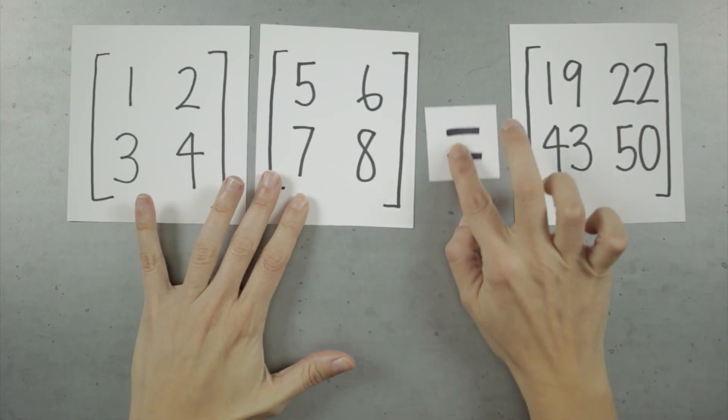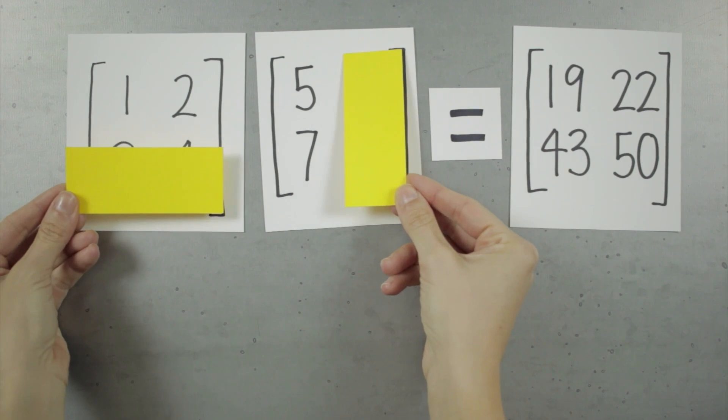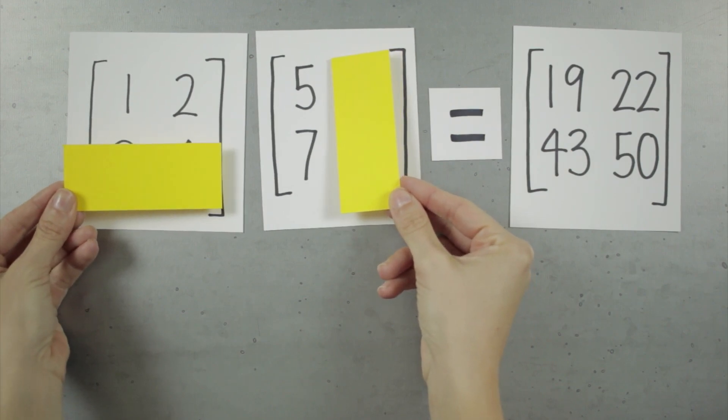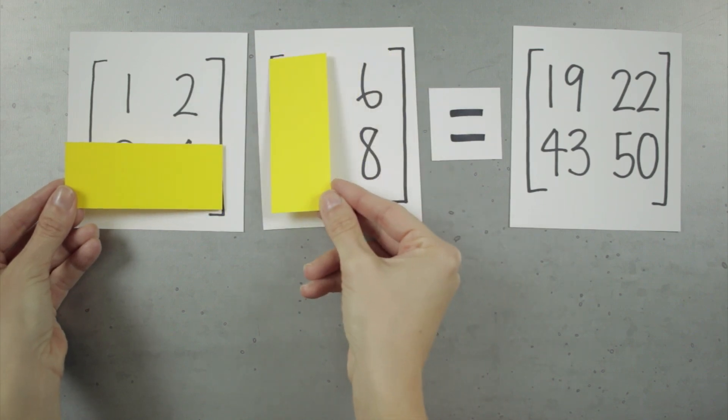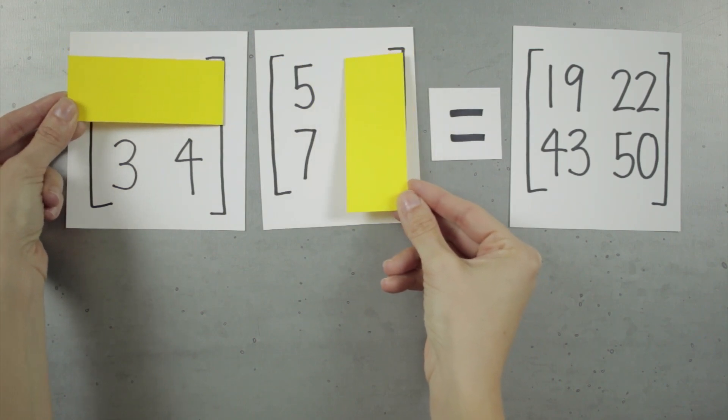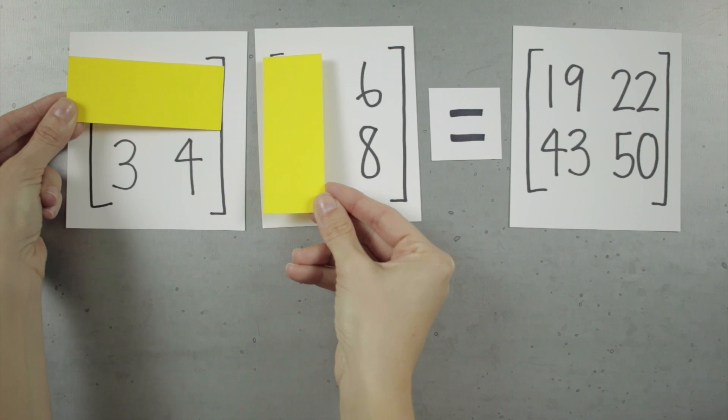So to get 19, we take the dot product of 1, 2, and 5, 7. To get 22, we take the dot product of 1, 2, and 6, 8. We get 43 from the dot product of 3, 4, and 5, 7. And to get 50, we take the dot product of 3, 4, and 6, 8.